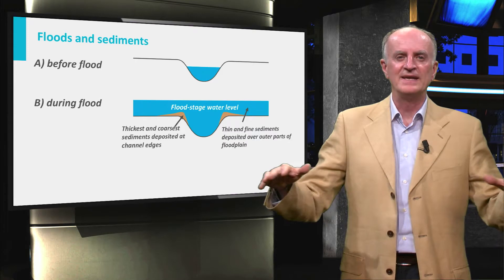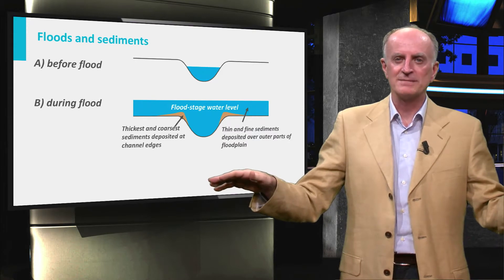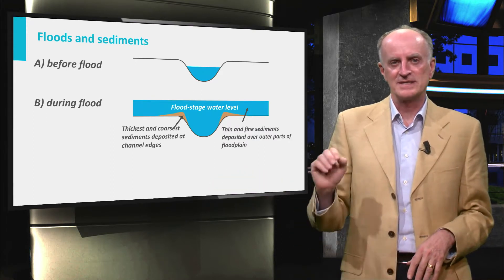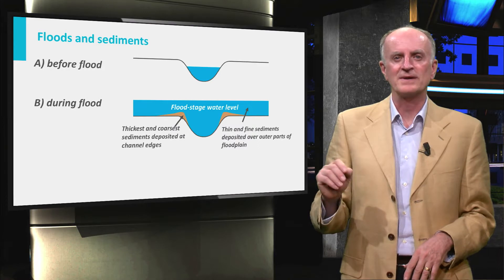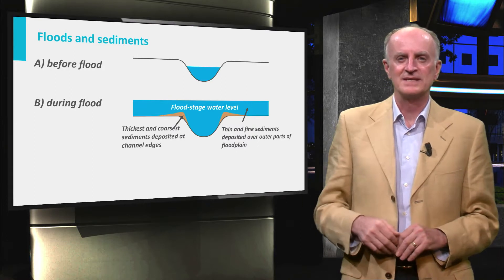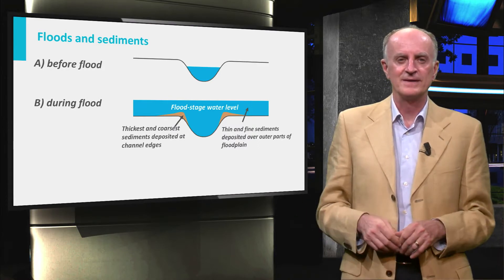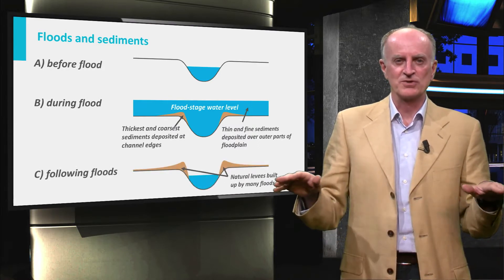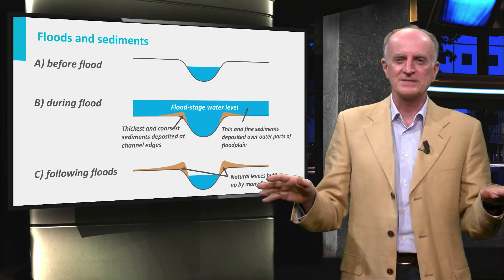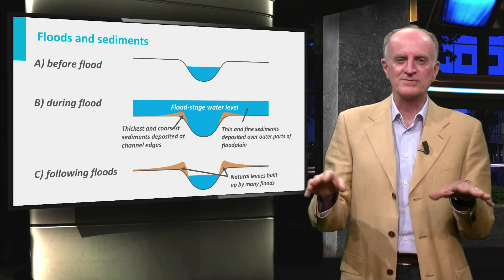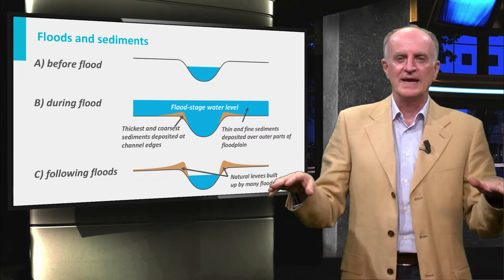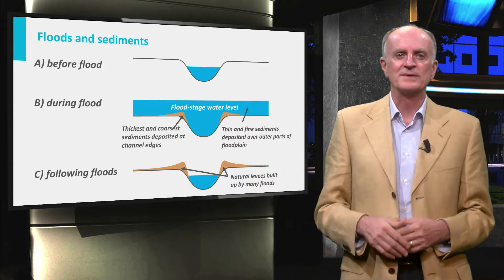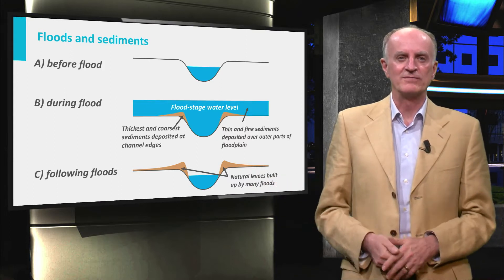Waters will then invade the large plains, but only carry the very fine-grained silt to fine-grained sand sediments, typical of floodplains. Once water discharge goes back to normal, waters in the plains will gradually infiltrate the ground or evaporate, and the river will retain its normal flow.